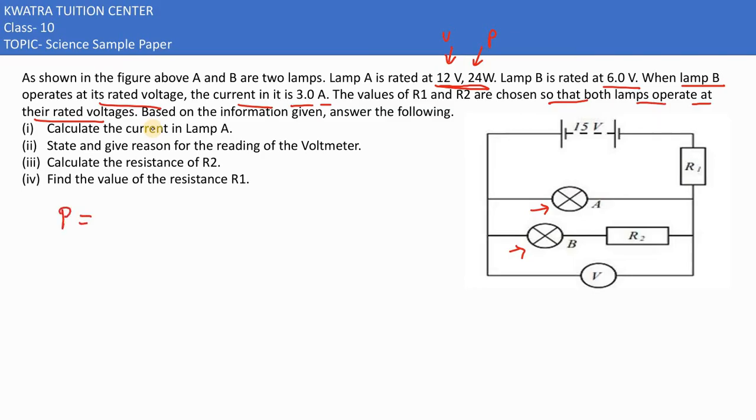So lamp A, we have P equals 24 watt and we have V. 24? No sorry, 12 volt. What is I? What is the formula based on these two categories? P over V. P is equal to IV, so we have I, what is P over V. So it is like 24 divided by 12, which will give you 2 ampere. I would be 2 ampere.